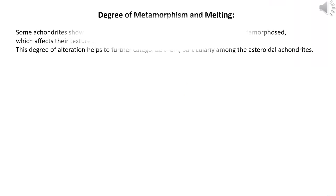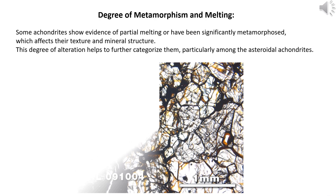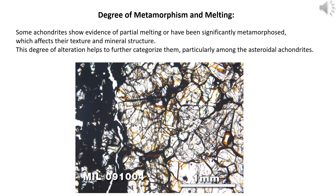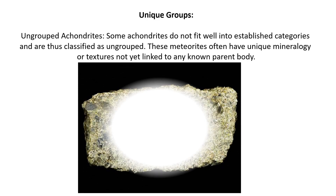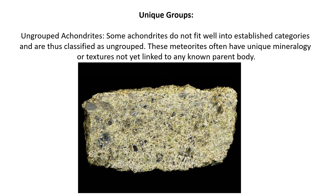Degree of metamorphism and melting: some achondrites show evidence of partial melting or have been significantly metamorphosed, which affects their texture and mineral structure. This degree of alteration helps to further categorize them, particularly among the asteroidal achondrites. Unique groups — ungrouped achondrites: some achondrites do not fit well into established categories and are thus classified as ungrouped. These meteorites often have unique mineralogy or textures not yet linked to any known parent body.